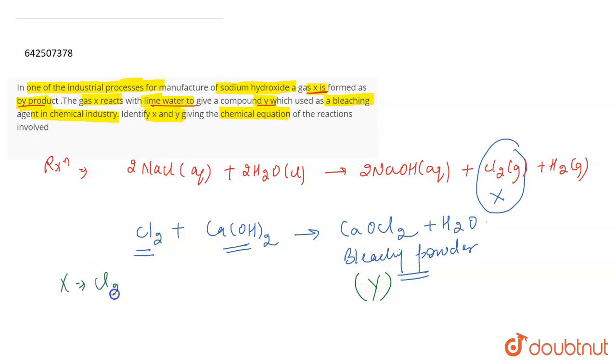So X is Cl2 gas and Y is bleaching powder, which is CaOCl2. These are the reactions involved in the process.